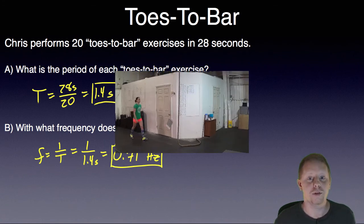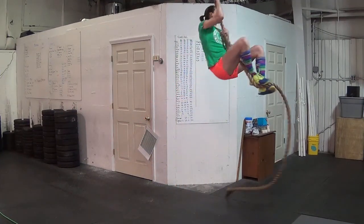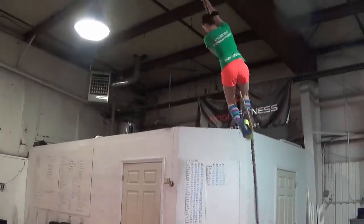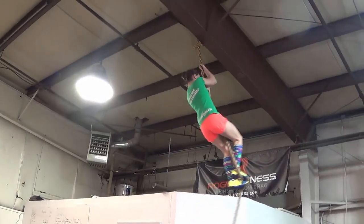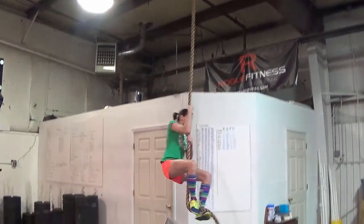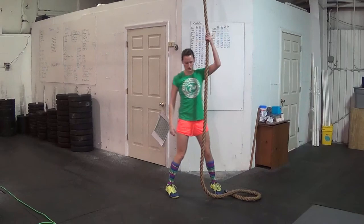Okay, let's move on. Let's take a look at Heidi in the rope climb. Heidi climbs 5 meters up a rope 3 times in 40 seconds. She has a mass of 50 kilograms.